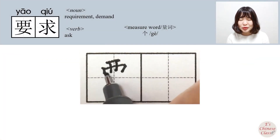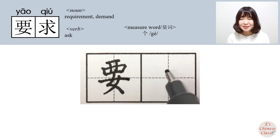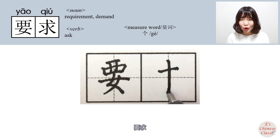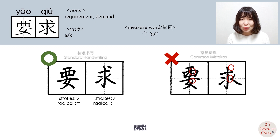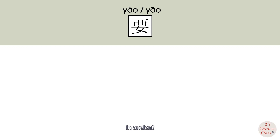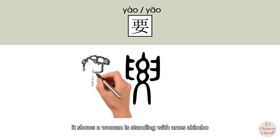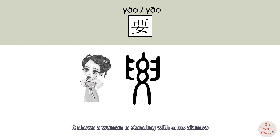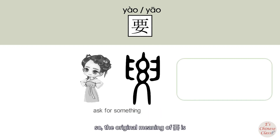要求. In ancient Chinese, 要 was written as a character showing a woman standing with arms akimbo, asking for something. So the original meaning of 要 is to demand or to ask.